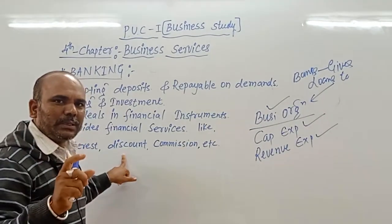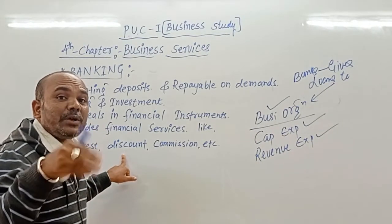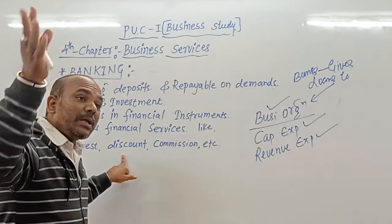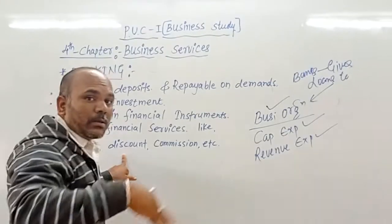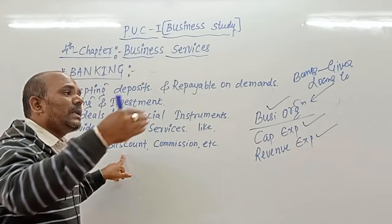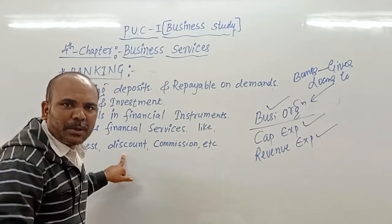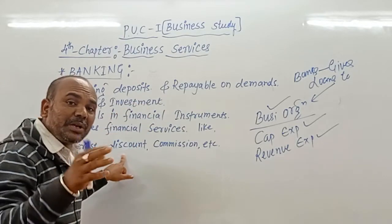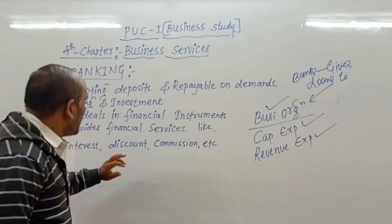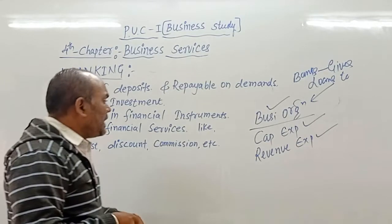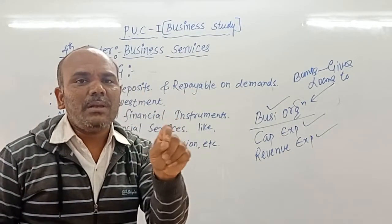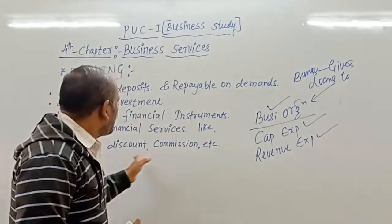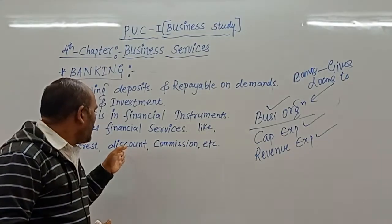For example, suppose you have a bill for 50,000 — this is called discounting of a bill. Whatever bill you have, that amount will be paid by your customer in a few days. But if you need urgent money at that moment, the bank will provide discounting of that bill by deducting 1,000 or 2,000 depending on the bill amount. Such financial services are provided by these banks.